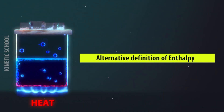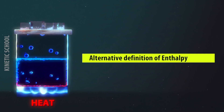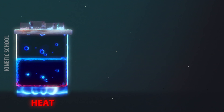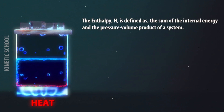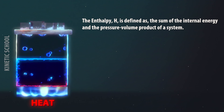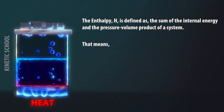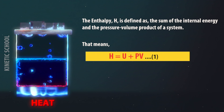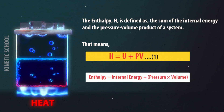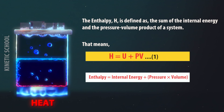We can also define enthalpy in an alternative way: as the sum of the internal energy and the pressure-volume product of a system. So, H is equal to U plus P times V — that means total enthalpy equals internal energy plus pressure times volume.